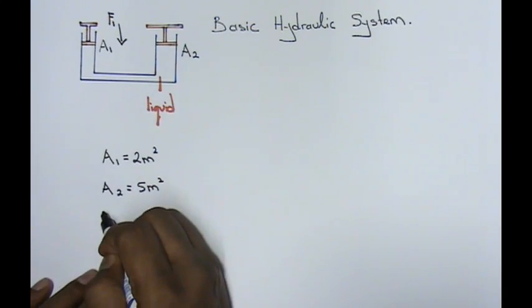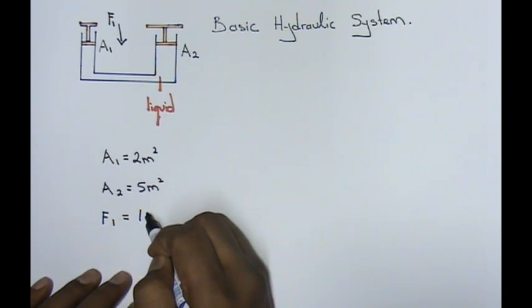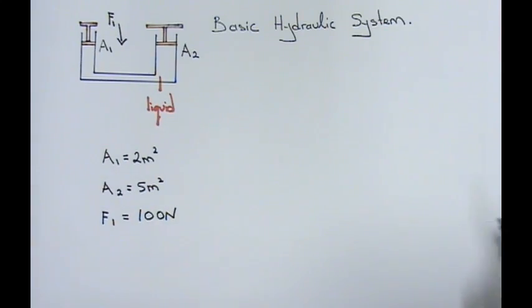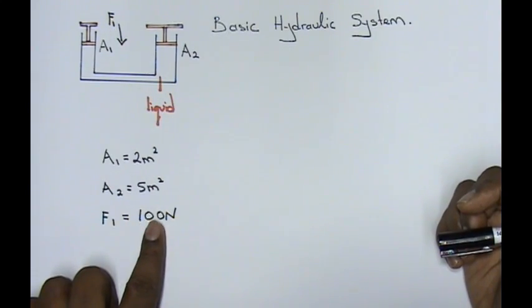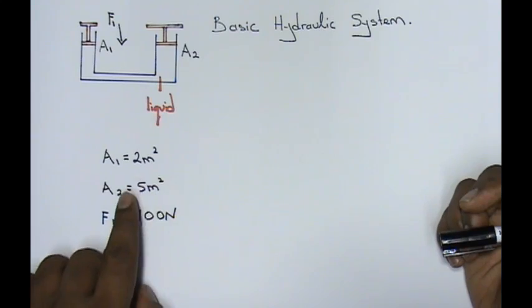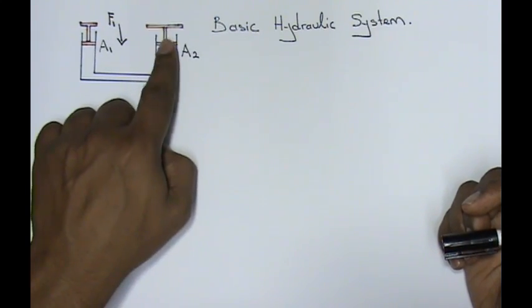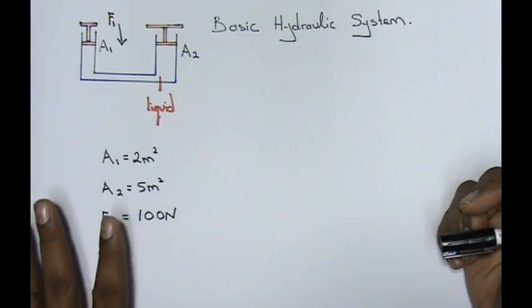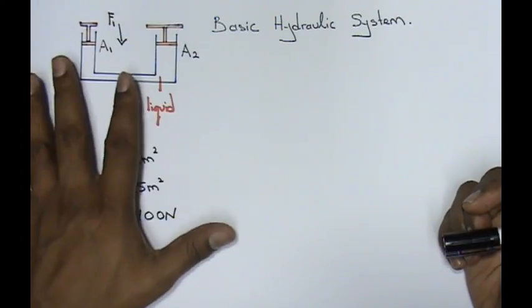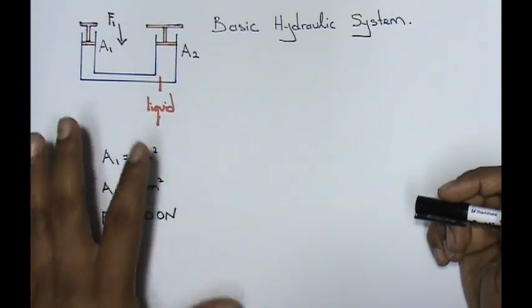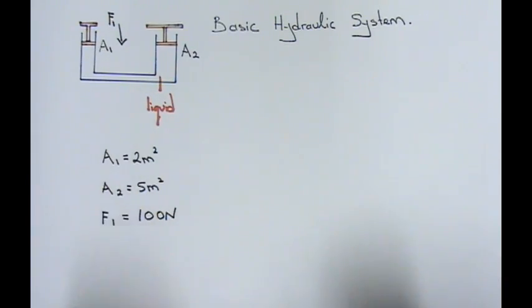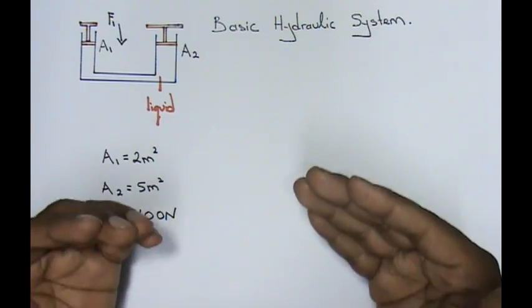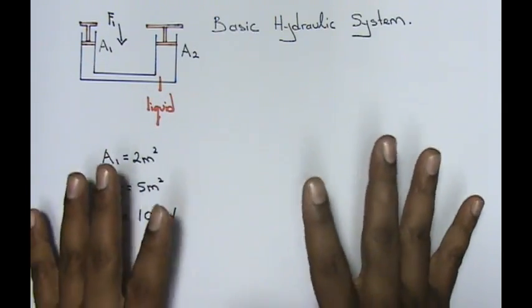I'm going to give you the value for F1 to be 100 newtons. Now, if you can clearly see what I've set up over here, my F1 at the small piston is 100, my area 1 is given to me as 2, and my area 2 over here is given to me as 5. These are all the things which is already given.